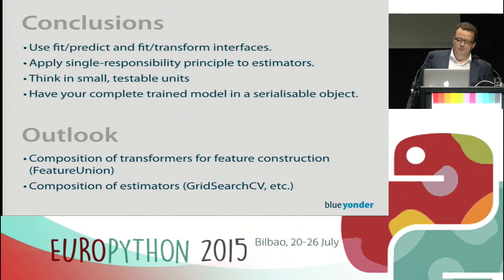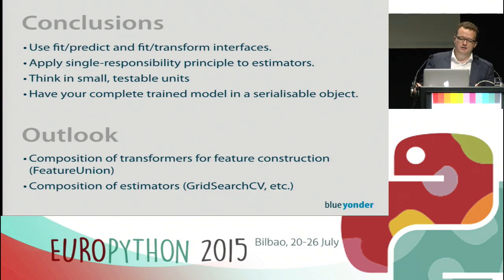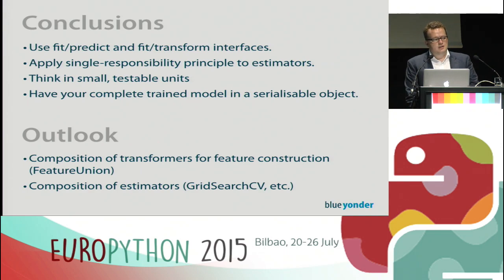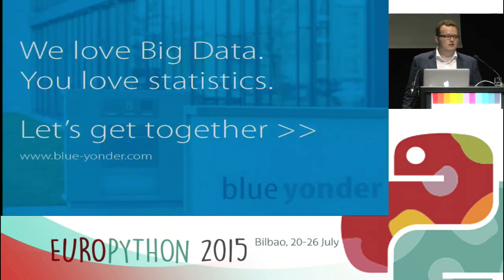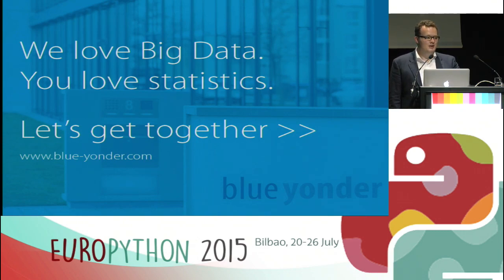There are many other composable transformers and meta-transformers in scikit-learn I didn't have time to cover — for example, `FeatureUnion` for combining different transformers for feature generation. Estimators are also composable: there's cross-validation and `GridSearch` in scikit-learn that take estimators and extend their functionality so predictions are cross-validated according to statistical methods. I'm at the end of my talk — thank you for your attention, happy to take questions.